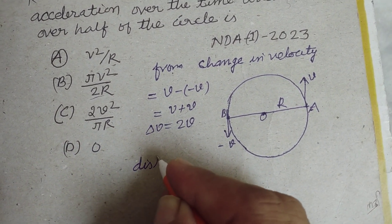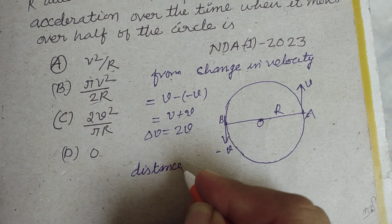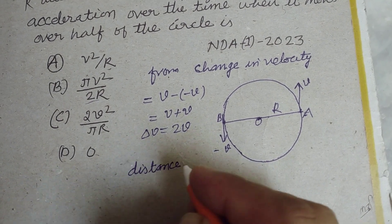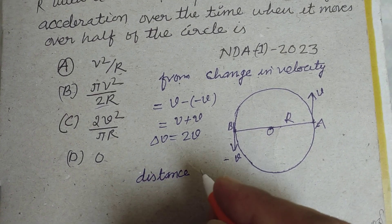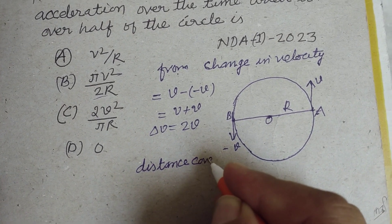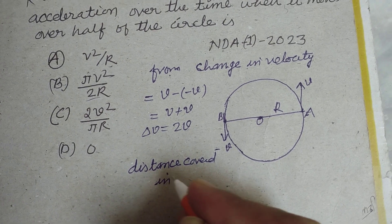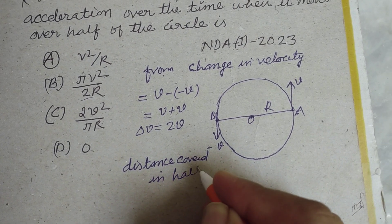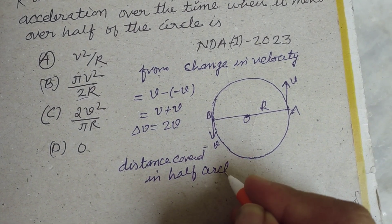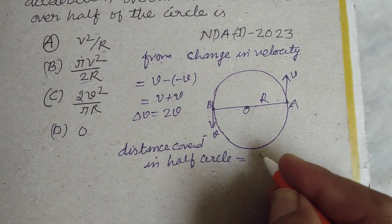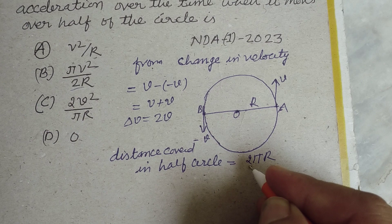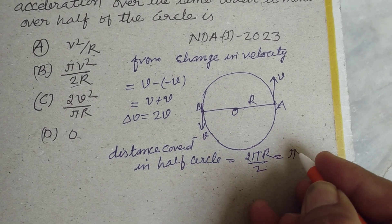Now distance covered in half circle. Distance, or we say displacement. Distance covered in half circle - this is the circumference, or half circumference: 2πR over 2. So this is πR.